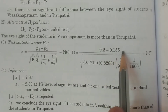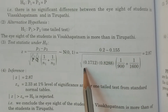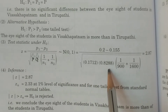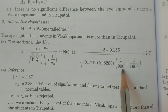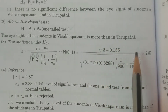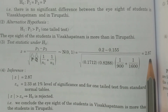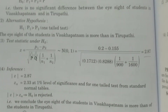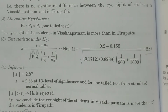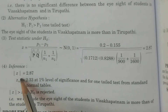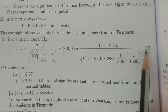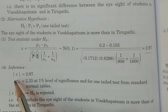The test statistic Z is calculated as: (small p1 minus small p2) divided by the square root of P-cron × Q-cron × (1/N1 + 1/N2), where P-cron = 0.1712, Q-cron = 0.8288, N1 = 900, N2 = 1200. The modulus of Z is equal to 2.87.